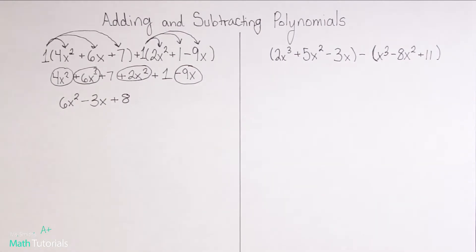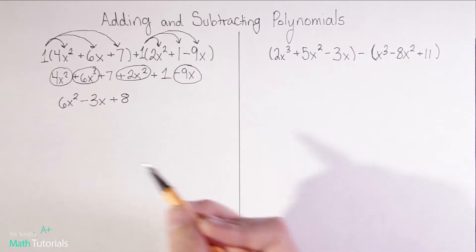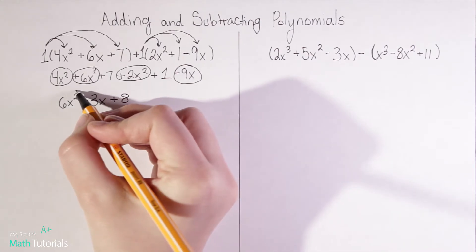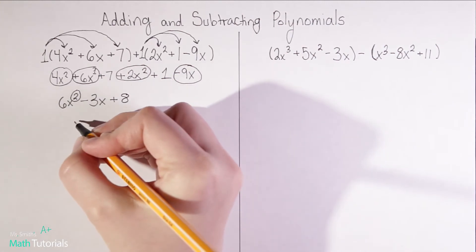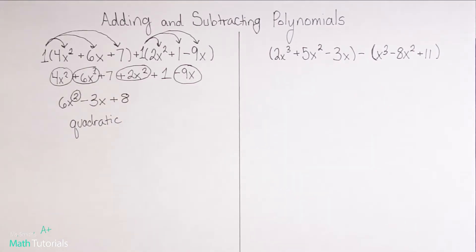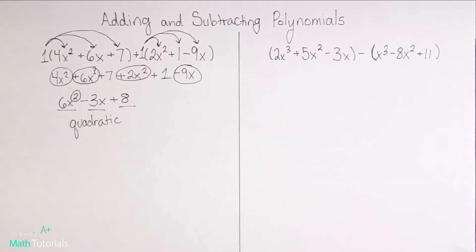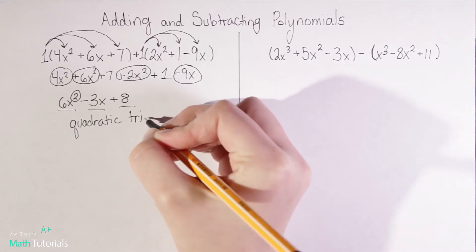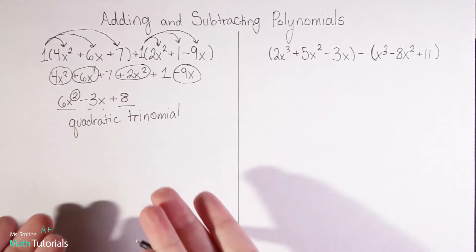Just for fun and review, let's go ahead and name this polynomial we've created. Remember, polynomial names have a first and last name. The first name is based on its degree — in this case we have a degree of 2, so we call that quadratic. The second name is based on how many terms it has, meaning sections separated by adding or subtracting signs. We have 1, 2, 3 — so just like a tricycle has three wheels, this is a trinomial. So that is adding polynomials.